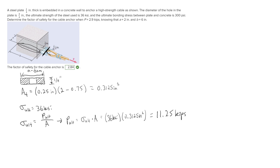Now remember the factor of safety formula is equal to P ultimate over P. We know P ultimate is 11.25 kips and P is equal to 2.9 kips, which is given in the problem statement. So our factor of safety would need to be 3.88 to prevent failure through the hole.